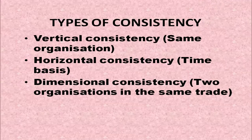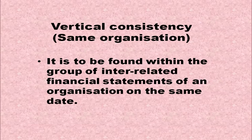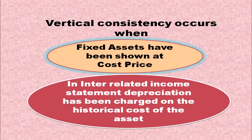We have different types of consistency: vertical consistency, horizontal consistency, and dimensional consistency. Vertical consistency is found within a group of interrelated financial statements of an organization on the same date — for example, when fixed assets are shown at cost price and depreciation in the income statement is charged on the historical cost of the asset.